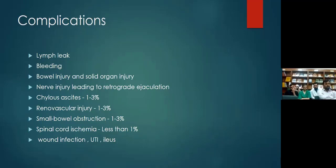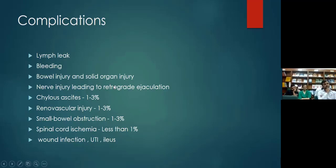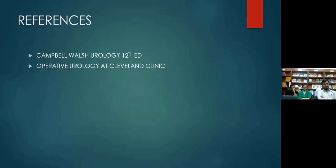Complications of RPLND include lymph leak — mitigated by identifying and ligating lymphatics — bleeding, bowel injury, solid organ injury, nerve injury of the superior hypogastric plexus leading to retrograde ejaculation, chylous ascites (1–3%), renal vascular injury (1–3%), small bowel obstruction (1–3%), spinal cord ischemia (rare but reported), wound infection, UTI, and ileus. This presentation was based on Campbell-Walsh Urology 12th edition and Operative Urology at Cleveland Clinic.